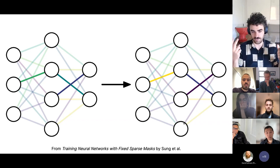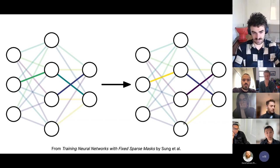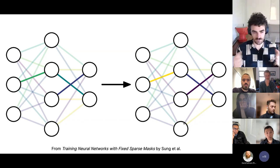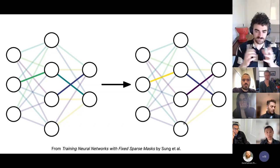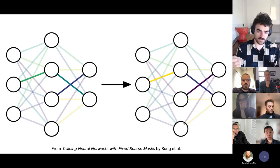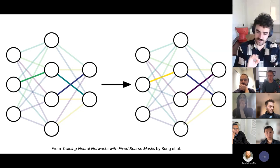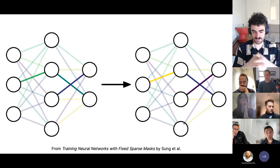Fish Mask is an alternative to updating all of the model's parameters at every step of training. In gradient descent, we compute a delta for every parameter value and update every parameter at every iteration. In Fish Mask, we identify a subset of the model's parameters — preferably a tiny subset, like a small fraction — and we only update those parameters. When communicating this change, we only need to communicate which parameters we changed and what their new values are. So we're basically doing sparse updates.